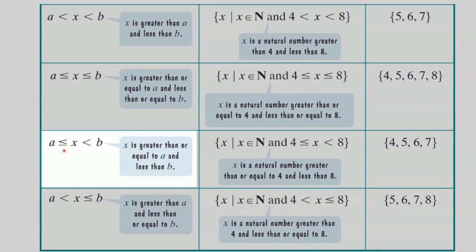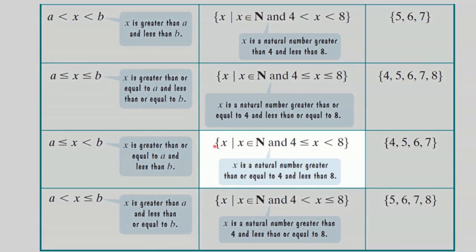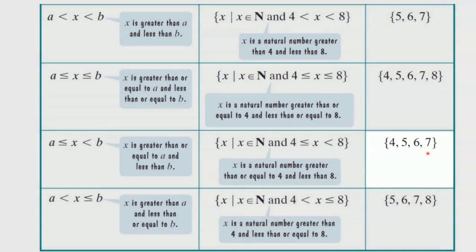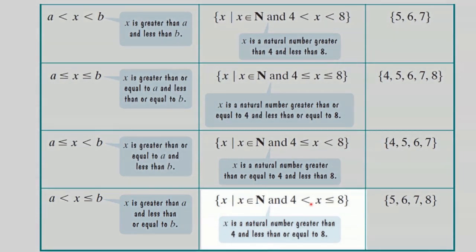If you have the equality symbol only on the left side, x is greater than or equal to a and strictly less than b. For example, x is a natural number greater than or equal to 4 and less than 8 gives the elements 4, 5, 6, and 7. Similarly, x greater than a and less than or equal to b — for example, greater than 4 and less than or equal to 8 — gives the elements 5, 6, 7, and 8.